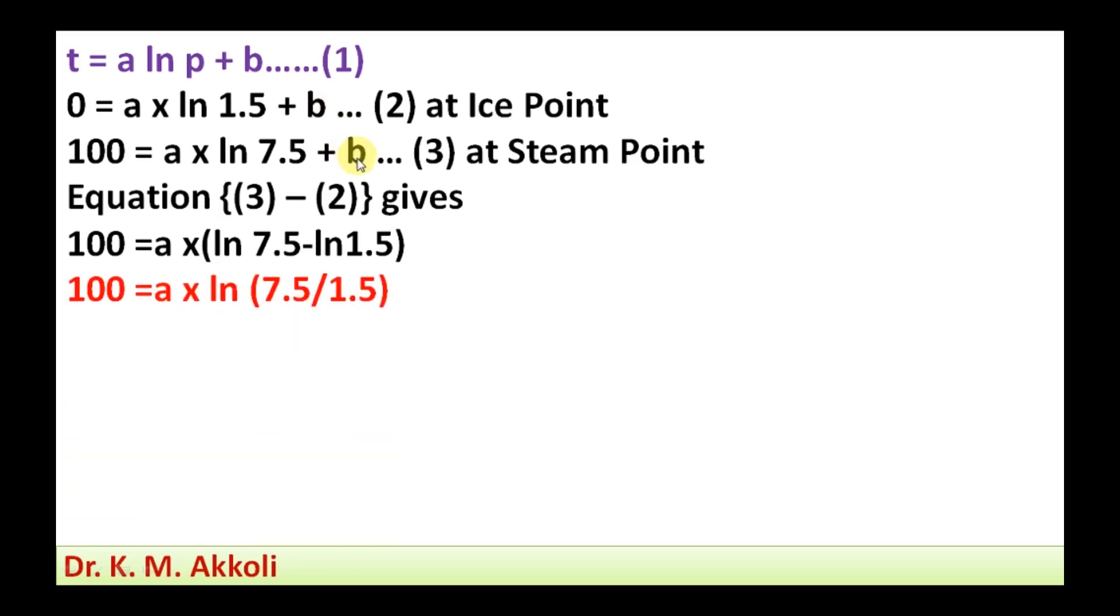Then simplify this one. The 100 equal to a into ln 7.5 by 1.5. This ln 7.5 minus ln 1.5 can be written as ln 7.5 by 1.5. Then after taking this one, a equal to 100 by this value. We are going to get the a value, that is a equal to 62.13.